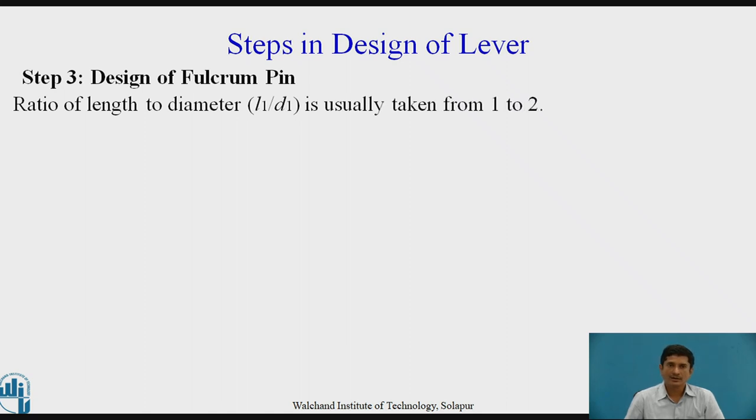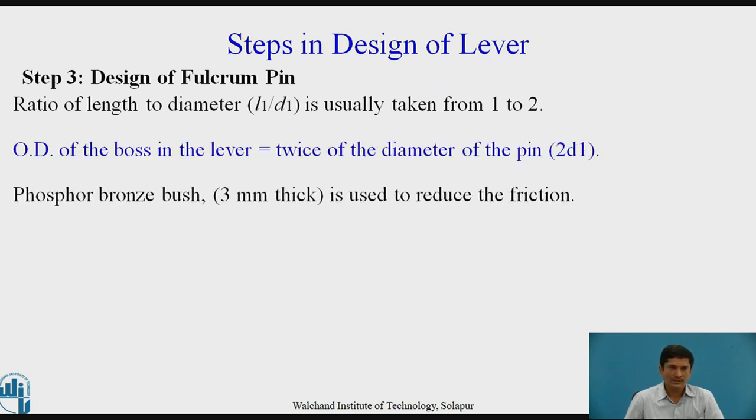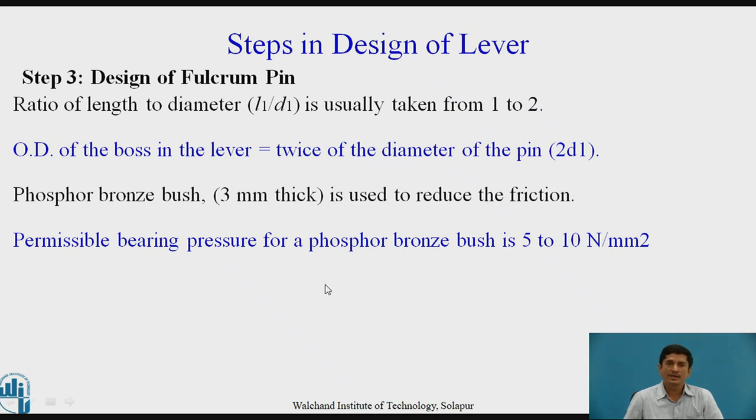P is the permissible bearing pressure. The length to diameter ratio is taken as 1 to 2. OD of the boss is taken as 2 times the pin diameter. Phosphor bronze bush of 3 mm thick is used to reduce the friction. Permissible bearing pressure is around 5 to 10 newton per mm².